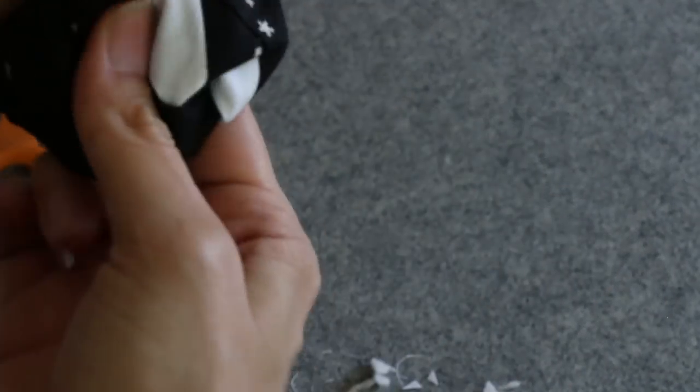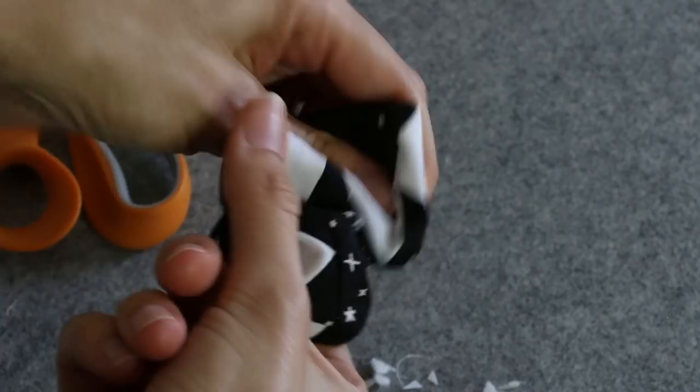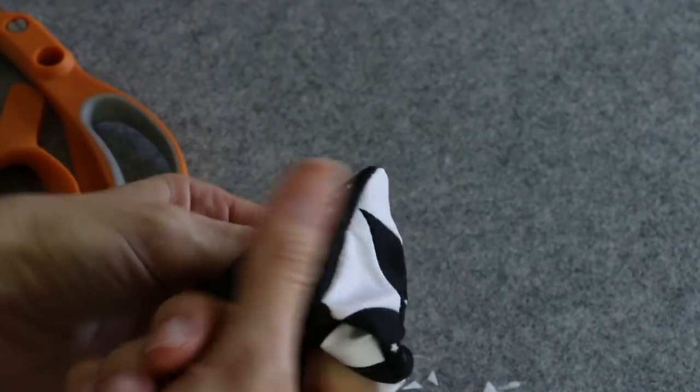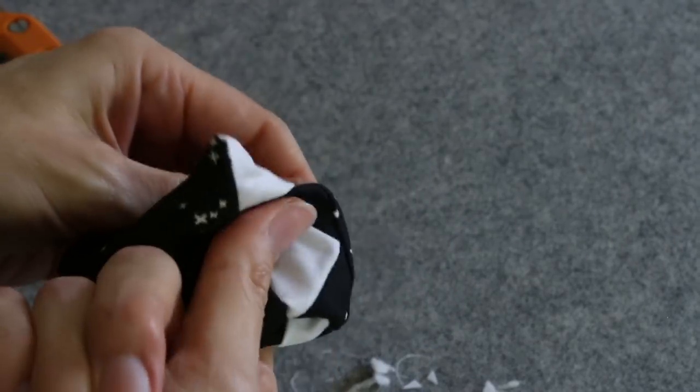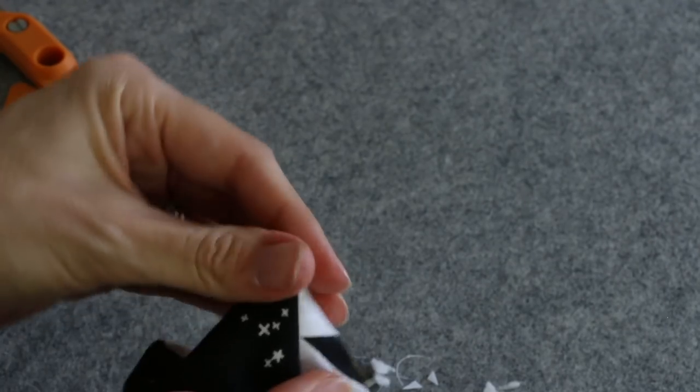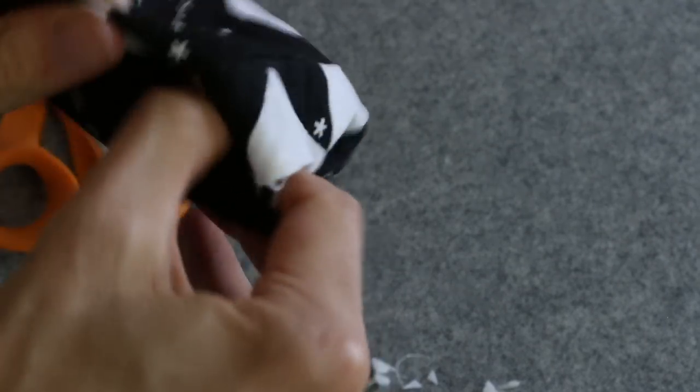Now if you have a point turner or a chopstick you can use that, or just use your fingernail. We want to pop those corners out and get any bulk straightened out.